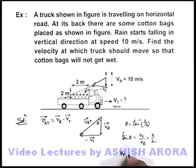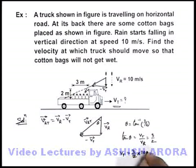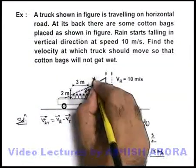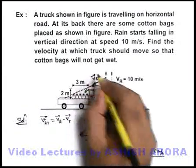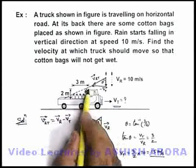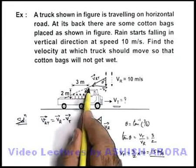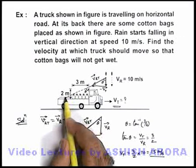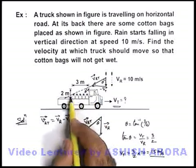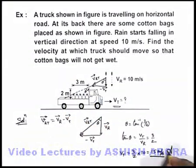From here we can easily calculate the velocity of the truck: it is (3/2) multiplied by the velocity of rain, which gives 15 meters per second. This is the speed at which the truck should move so that rain drops fall on the truck at angle theta to the vertical, such that from the top corner of the truck, the grazing rain drop falls on the floor of the truck, just grazing the last cotton bag. So all the cotton bags will be saved. This is the answer to this problem.